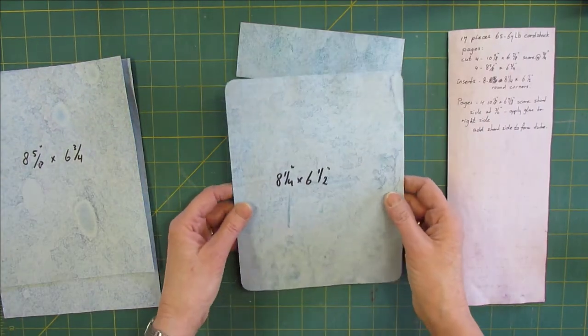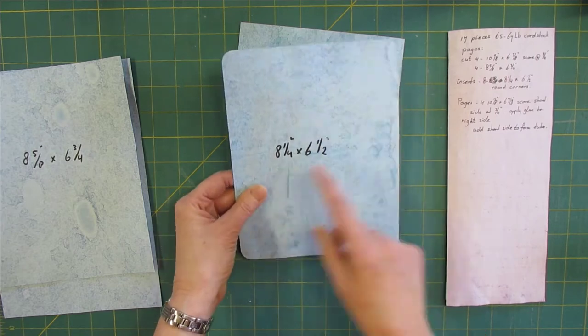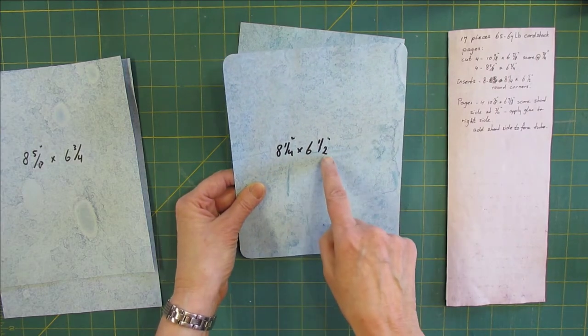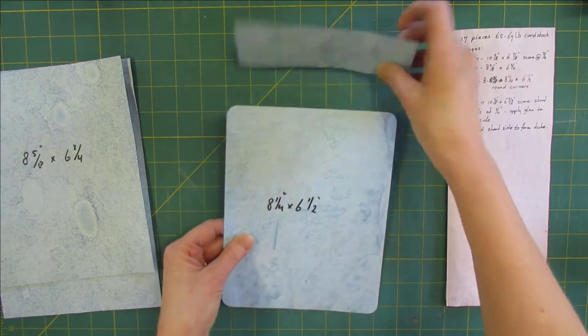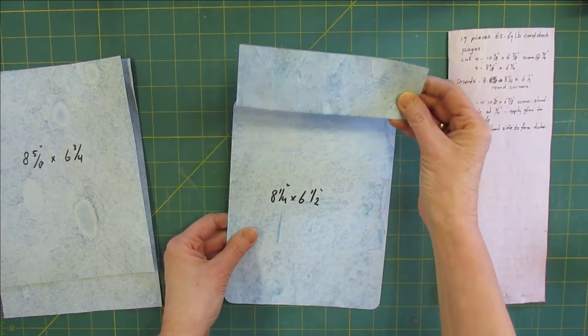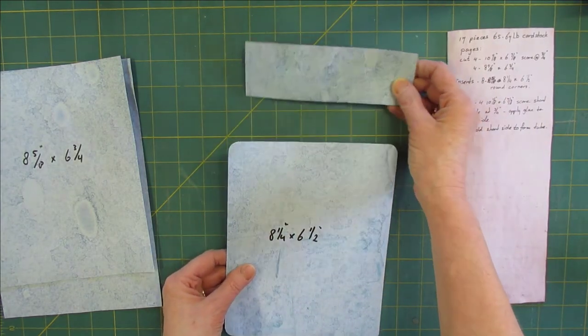For the inserts we need eight pieces that are 8 1/4 by 6 1/2. Round the corners and keep the short piece that is about 2 to 2 1/2 inches wide to make tabs.